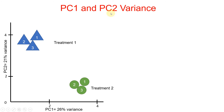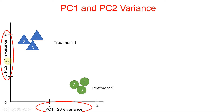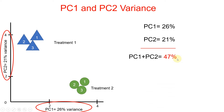Now let's try to understand what PC1 and PC2 variance means. On the X axis here is PC1 at 26% and PC2 at 21%. It is important to note that PC1 is always higher compared to PC2. If we sum up PC1 and PC2 it is almost 47%. This means the gene expression data shows that 47% of the variation in this transcriptome data was due to treatment one and treatment two.